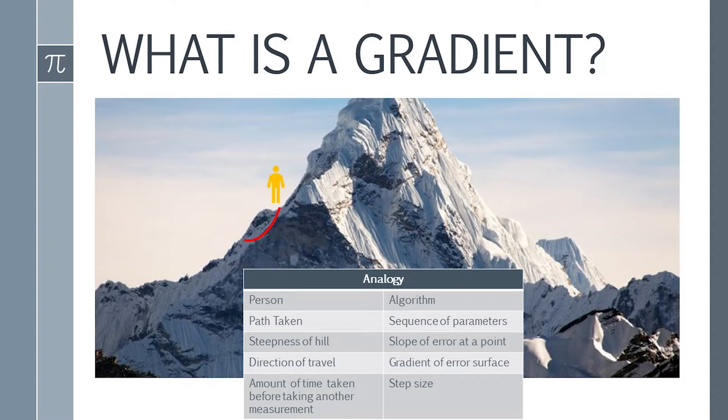They can use the method of gradient descent, which involves looking at the steepness of the hill at their current position, then proceeding in the direction with the steepest descent, that is, downhill. In this analogy, the person represents the algorithm and the path taken down the mountain represents the sequence of parameter settings that the algorithm will explore.